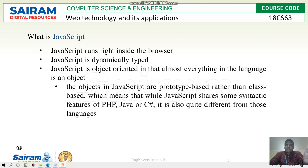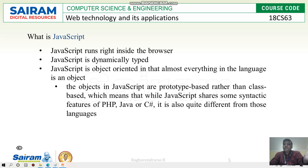JavaScript runs right inside the browser — the browser itself is the execution environment. JavaScript is dynamically typed, so as and when required it gets executed. JavaScript is object-oriented in that almost everything in the language is of an object type, but we cannot call it a fully object-oriented language or object-based language. Inheritance and polymorphism can be present in JavaScript, but the objects are prototype-based rather than class-based. JavaScript shares some syntactic features of PHP, Java, or C#, but is quite different from other languages — it is an object-based language rather than an object-oriented language.